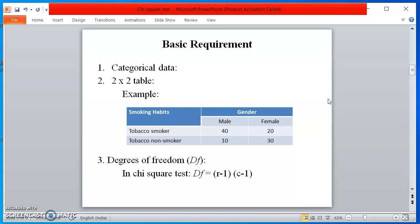Below, I am citing one example of a 2x2 table. In this table, you can see two categories: smoking habits and gender. Each category is further divided into two. Smoking habits divided into tobacco smoker and tobacco non-smoker, whereas gender divided into males and females.